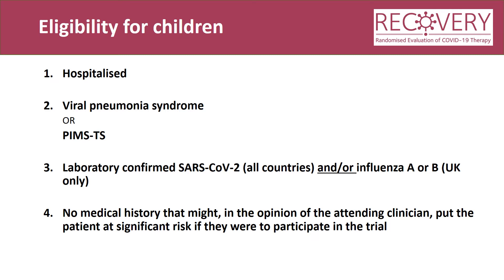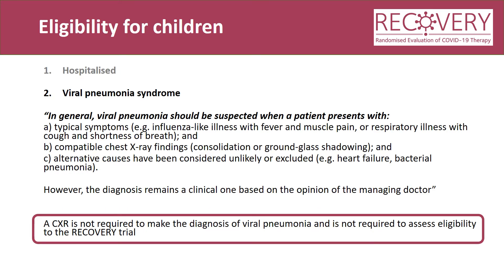The eligibility criteria for children are the same as those for adults. Number one: the child must be hospitalised — they can be either admitted with COVID or influenza or may have developed one of these infections whilst in hospital. The child should have a viral pneumonia syndrome. Viral pneumonia should be suspected when a patient presents with: typical symptoms such as influenza-like illness with fever and muscle pain or respiratory illness with cough and shortness of breath; compatible chest X-ray findings, that is consolidation or ground glass shadowing; and alternative causes should have been considered unlikely or excluded. The diagnosis remains a clinical one based on the opinion of the managing doctor. A chest X-ray is not required to make the diagnosis of viral pneumonia and is not required to assess eligibility to the recovery trial — a chest X-ray should only be done if this is part of the child's clinical care.